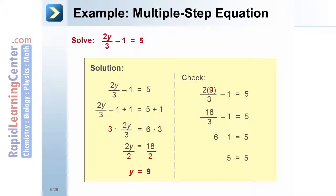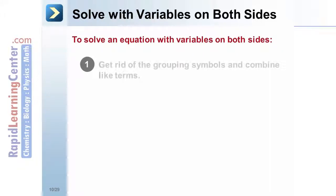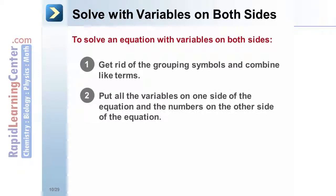How to solve with variables on both sides: To solve an equation with variables on both sides: (1) Get rid of the grouping symbols and combine like terms. (2) Put all the variables on one side of the equation and the numbers on the other side. (3) Solve the equation. (4) Verify the solution.